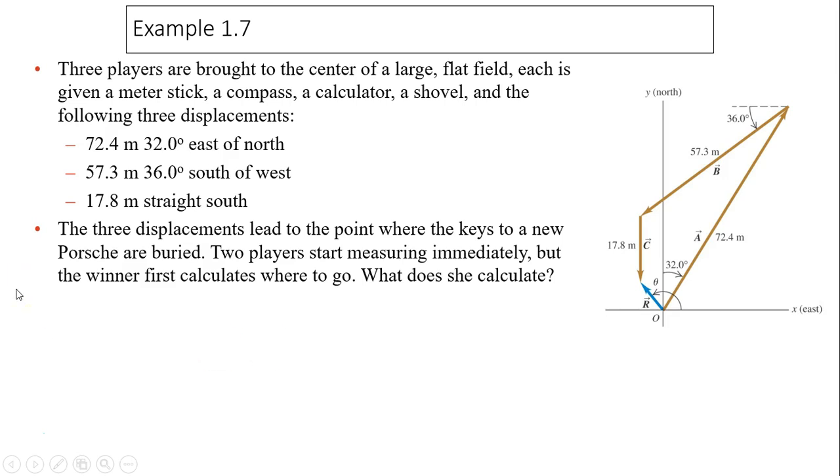Let's take a look at example 1.7. Three players are brought to the center of a large flat field, each given a meter stick, compass, calculator, shovel, and the following three displacements: vector A, vector B, vector C. The three displacements lead to the point where the keys to a new Porsche are buried. Two players start measuring immediately, but the winner first calculates where to go. What does she calculate? This is asking for the resultant vector.